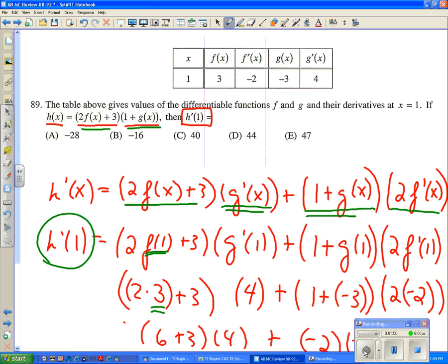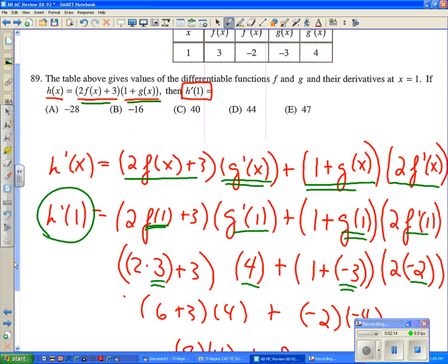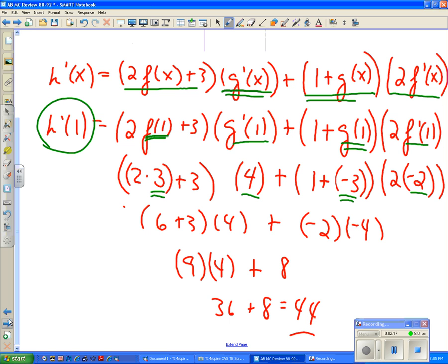f of 1 is 3. So we take the f of 1 out, and we put a 3 in. And f prime 1, f prime 1 is a negative 2. So we put that in for f prime 1. And then g of 1 is negative 3. So we say, g of 1 is a negative 3. And finally, g prime 1 is a 4. And we go and make that replacement for g prime 1. And then it's just a question of being very careful about taking and adding and multiplying and getting our signs correct.